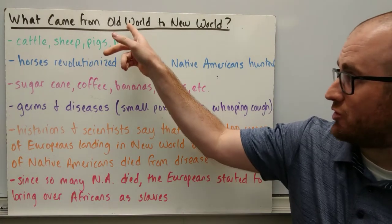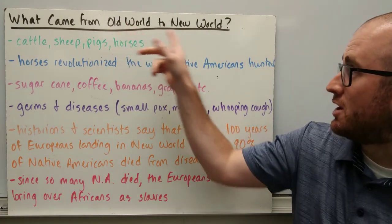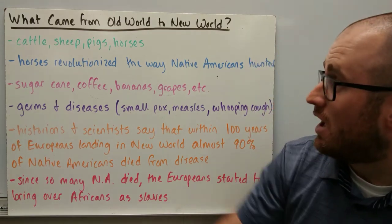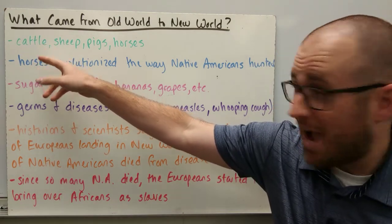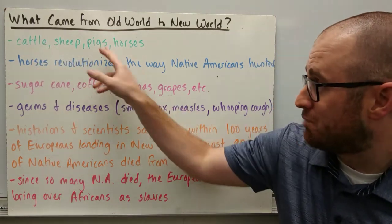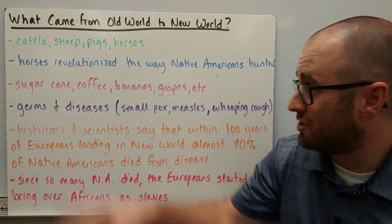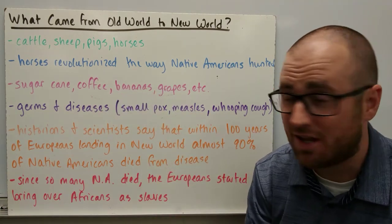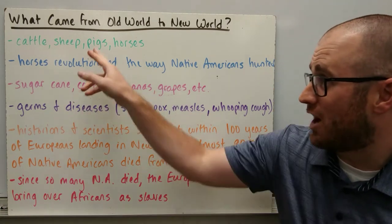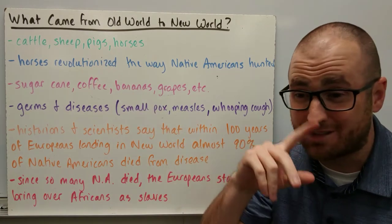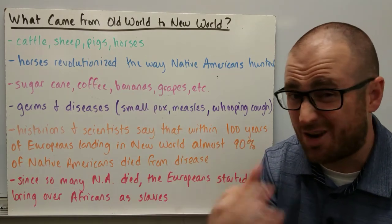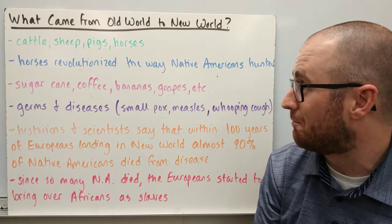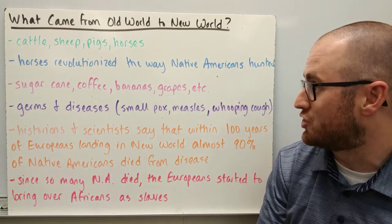So what came from the old world — from Europe to the Americas? You got cattle: cows, sheep, pigs, horses — all came over. Horses really revolutionized the way Native Americans hunted. Pigs were actually funny because Europeans didn't really keep pigs in pens, so they just kind of roamed everywhere. They were very destructive and gross — they're just slobby animals in general.